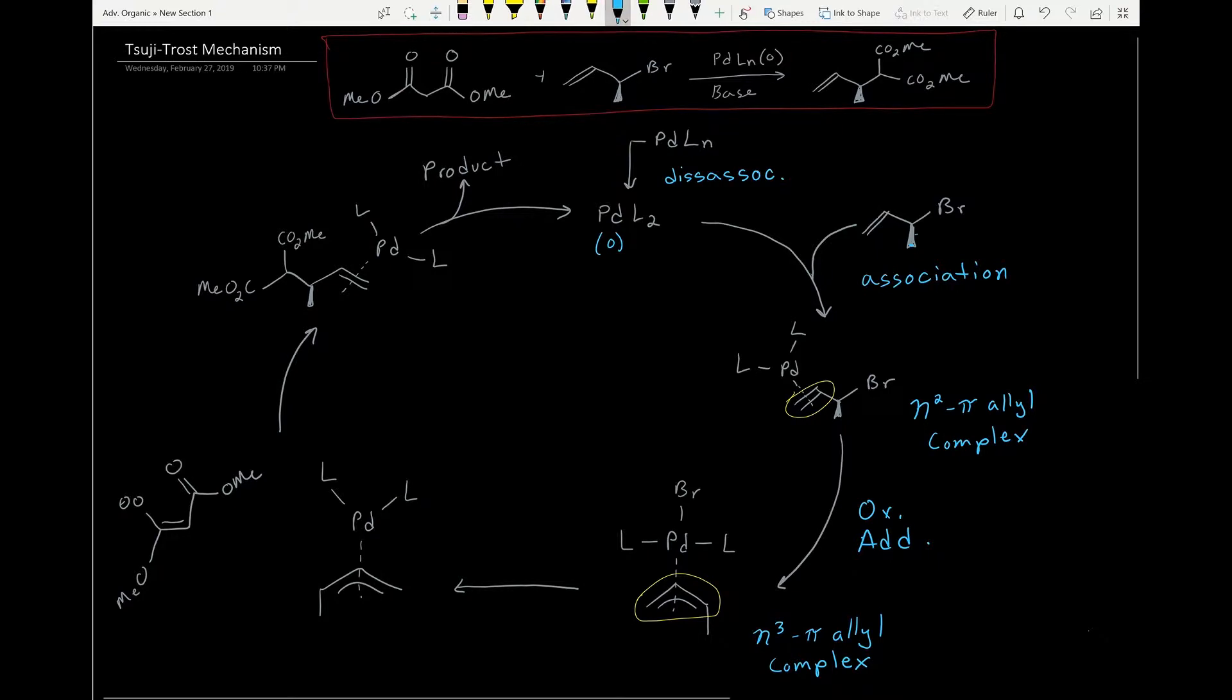That gives our palladium an oxidation state of two, since both of these are minus one ligands. Then our leaving group is expelled, so the bromine just leaves, which keeps this palladium at an oxidation state of two, but now it's got a positive charge associated with it.